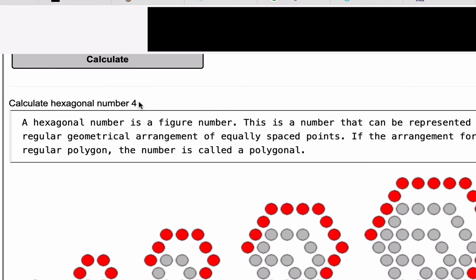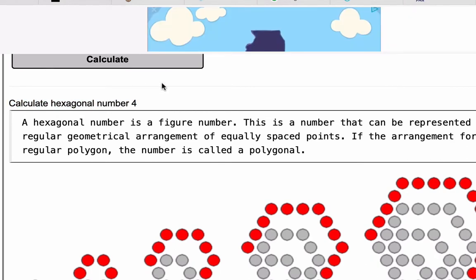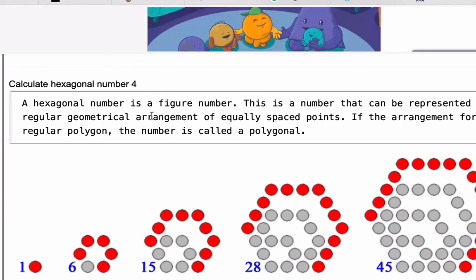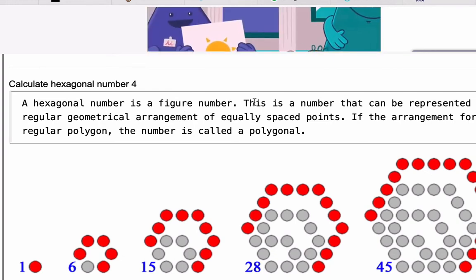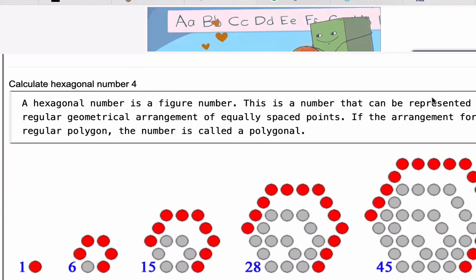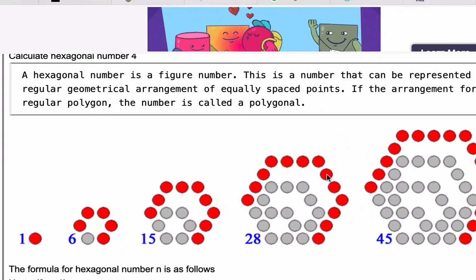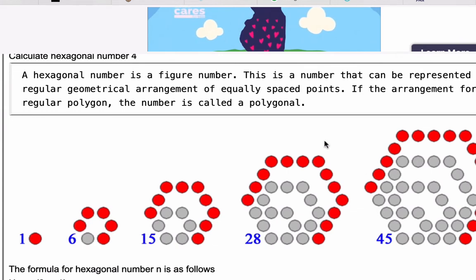So the calculator just says calculate hexagonal number four. What is a hexagonal number? It's a figurate number. And so what that means is this is a number that can be represented by a shape of equally spaced points. In this case, a hexagon, as you see in this image.